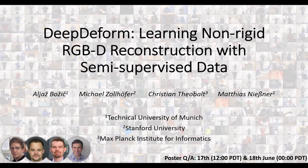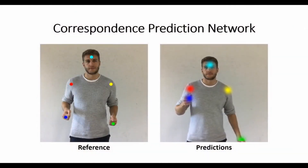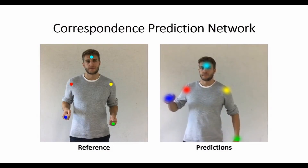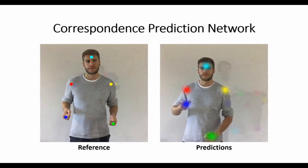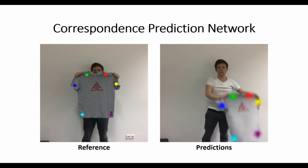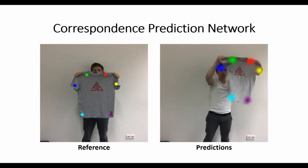We present DeepDeform, a data-driven non-rigid reconstruction approach. We collected a dataset of 400 non-rigid RGBD sequences with more than 5500 densely aligned frame pairs. Using the data, we train a network to predict non-rigid correspondences in the form of heatmaps. For any point in the reference frame, the network predicts an accurate correspondence even in the case of large deformation.